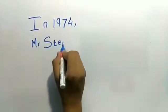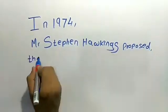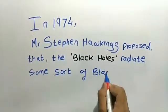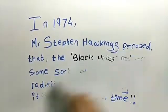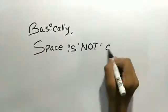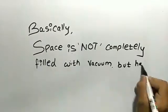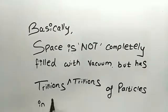In 1974, Mr. Stephen Hawking proposed that black holes radiate some sort of black body radiation and thus evaporate themselves after a certain time. Basically, space is not completely filled with vacuum but has trillions and trillions of particles.